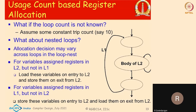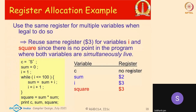That's really how simple usage-count-based register allocation works: it quickly estimates how often each variable is used, which variables conflict with each other, and then decides which variables should be allocated registers.